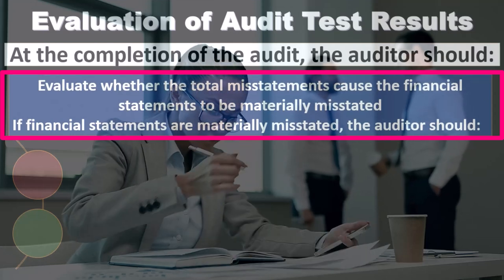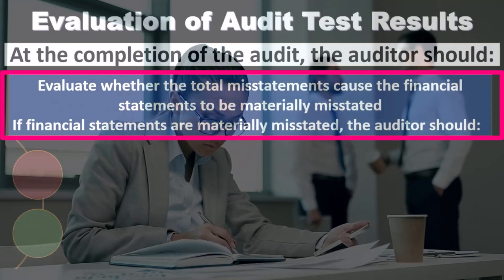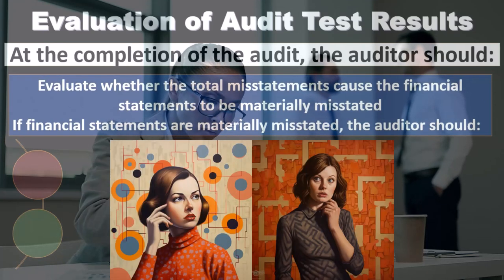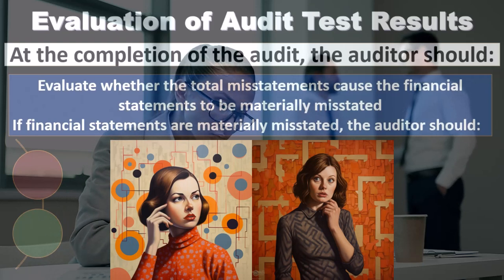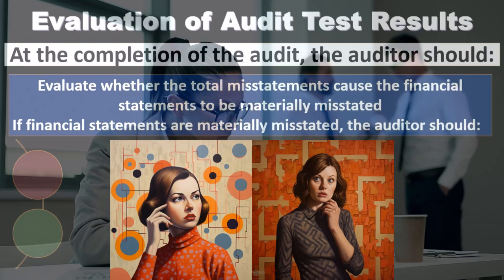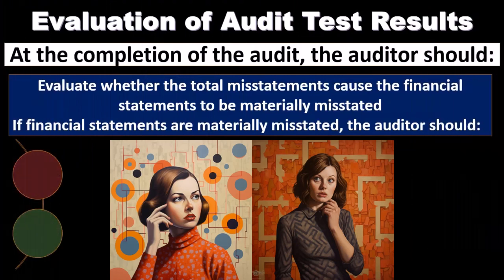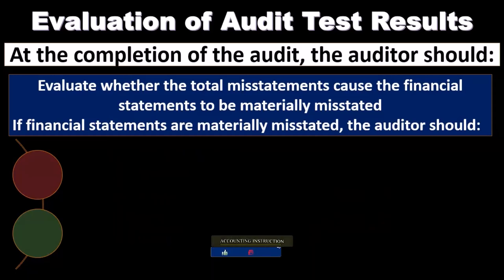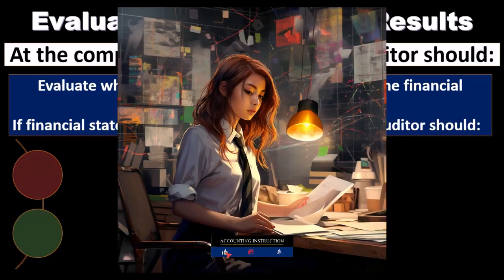We can imagine our auditing process here. We start off planning the audit. As we plan the audit, we consider what would constitute a material misstatement. Our goal is to give an opinion — hopefully that the financial statements are free of material misstatements. Therefore we need to know what would constitute a material misstatement.